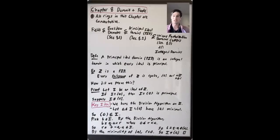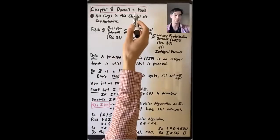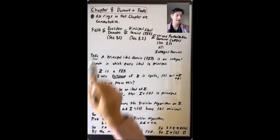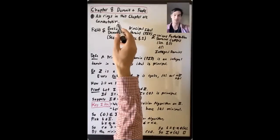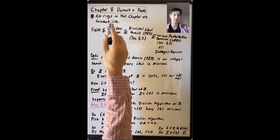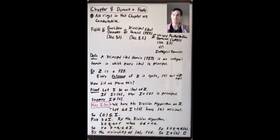This is the first of our lectures that will take us through Chapter 8 of Dummit and Foote. At the beginning of this chapter, Dummit and Foote say all rings in this chapter are commutative. This is an example where they give an assumption early on at the beginning of a section and don't continue to repeat it everywhere throughout the chapter. Please keep this in mind for the next several lectures.